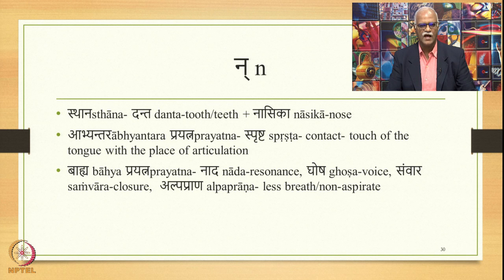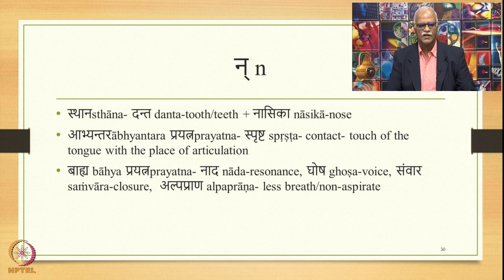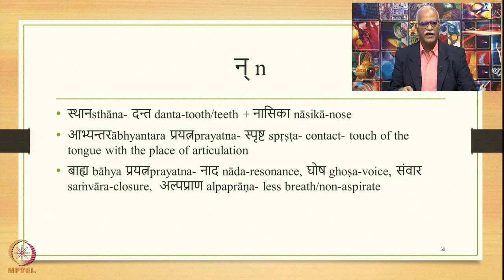The last sound in this class is na, whose place of articulation is danta (tooth or teeth) plus nasika (the nose). Abhyantara prayatna is sprashta — contact or touch of the tongue with the place of articulation. The bahya prayatna is nada, ghosha, and samvara — resonance, voice, and closure. This na is also alpaprana — requires less breath and is called non-aspirate sound.